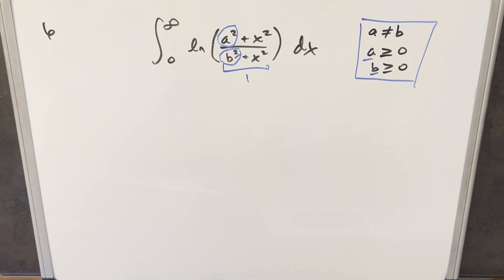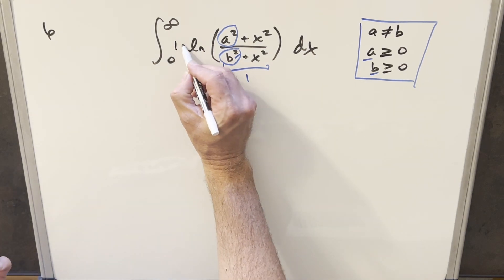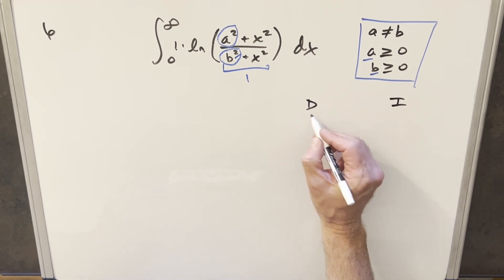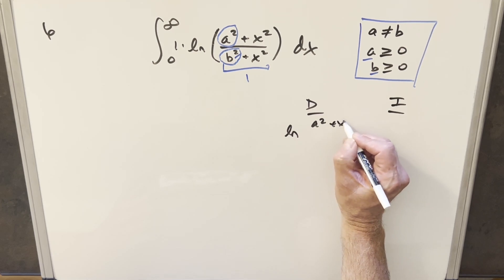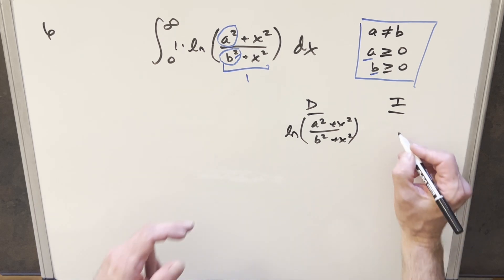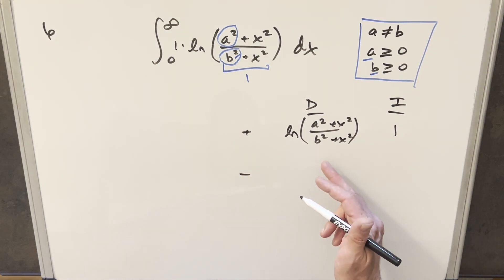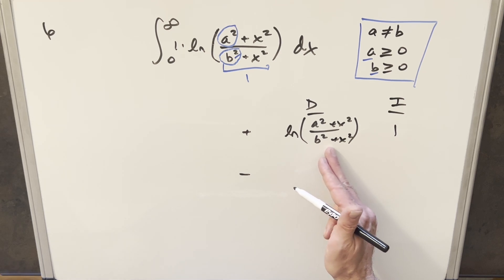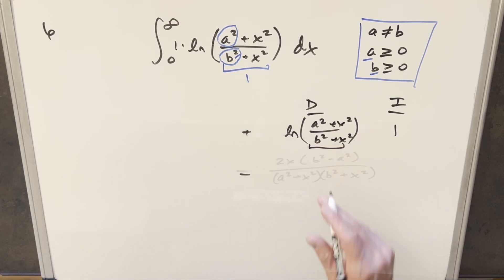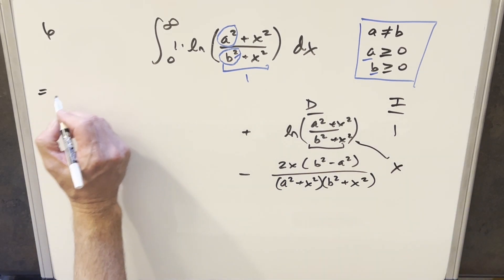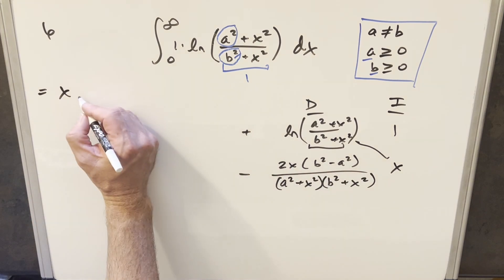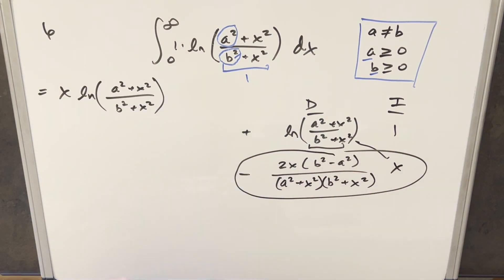Getting started, what I actually did wasn't anything particularly fancy — I just did integration by parts. We do that a lot with natural log, and what we can do is create a one there and use the DI method or tabular integration, differentiating the whole natural log part. So we differentiate natural log of (a squared plus x squared) over (b squared plus x squared), then integrate 1 to get x. This is a pretty messy derivative — you take the reciprocal of what's inside and work through the chain rule and quotient rule. If you do all that, you get this expression on the diagonal: x times that natural log.